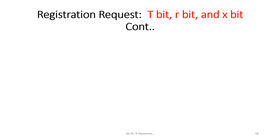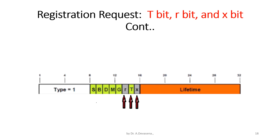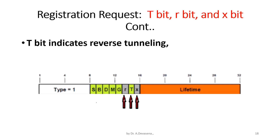The T-bit, R-bit, and X-bit fields in the registration request are shown in the diagram. The T-bit indicates reverse tunneling. The R-bit and X-bit are set to zero.